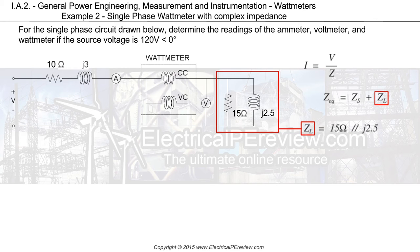Let's start by finding the equivalent impedance of these two in parallel. We have a 15 ohm resistor in parallel with a complex impedance of j2.5. Using complex analysis, we'll solve using reciprocals.